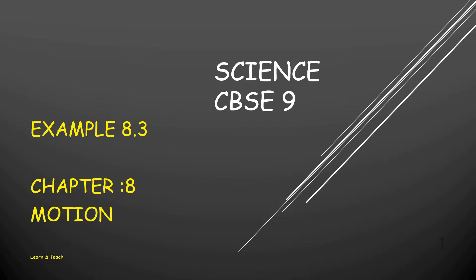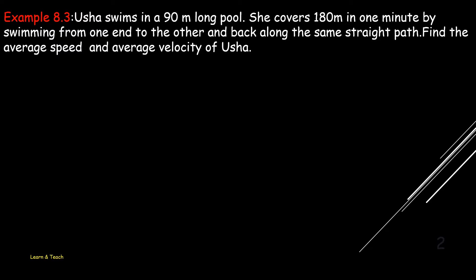Hi all, today we are going to discuss Example 8.3 of the motion chapter. The question is: Usha swims in a 90-meter long pool. She covers 180 meters in one minute by swimming from one end to the other and back along the same straight path. Find the average speed and average velocity of Usha.